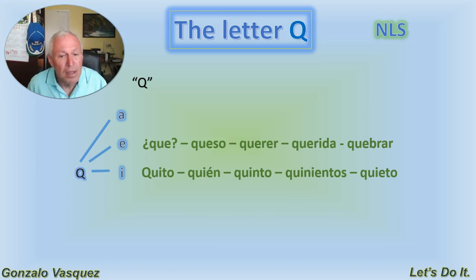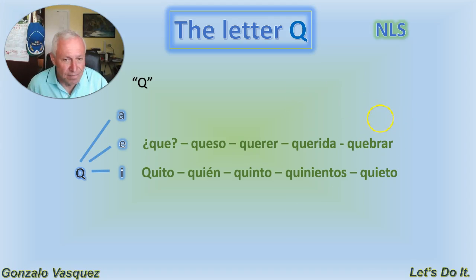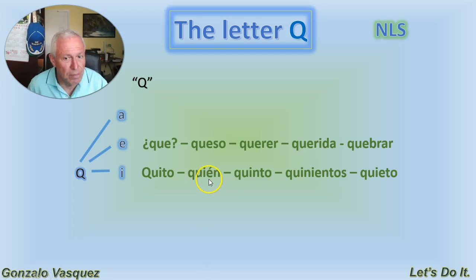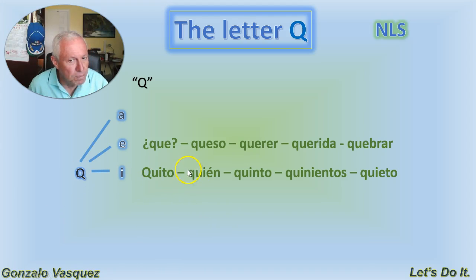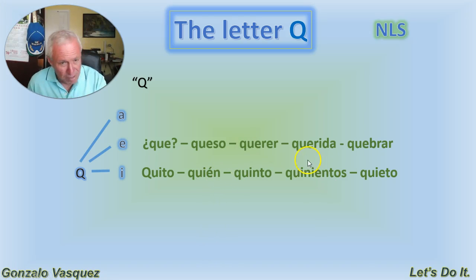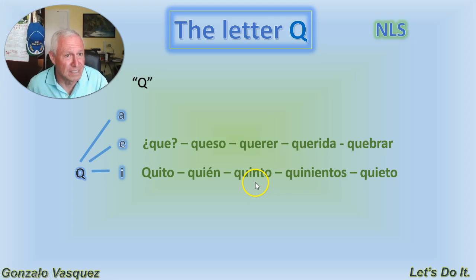With the letter I — con la letra I — we have a few. Like Quito, the capital of Ecuador. ¿Quién? — most of the time it is used as a question: ¿Quién? If I go to make it a question, I say ¿Quién? But quién can also be part of a word or part of a phrase depending on what we're talking about. We're going to see that in the future.